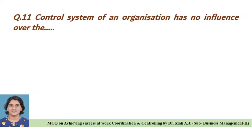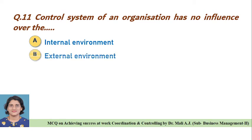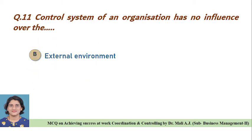Question eleven: Control system of an organization has no influence over the — Option A: internal environment, Option B: external environment, Option C: customer, Option D: government. Correct answer is Option B, control system of an organization has no influence over the external environment.